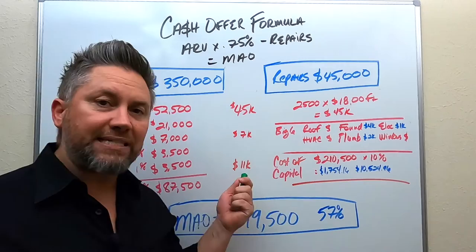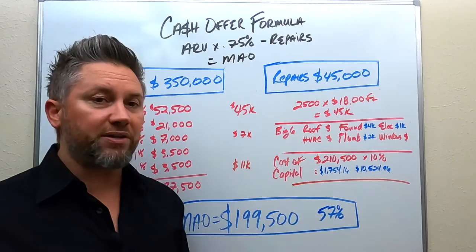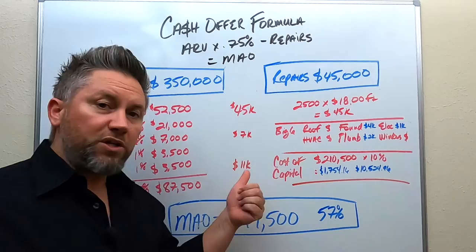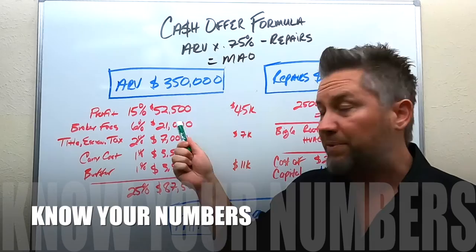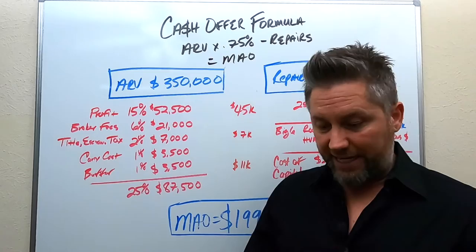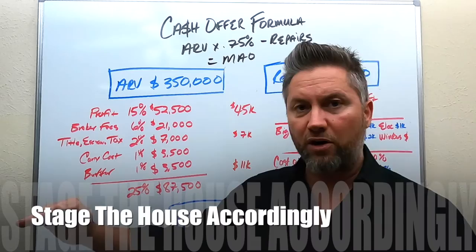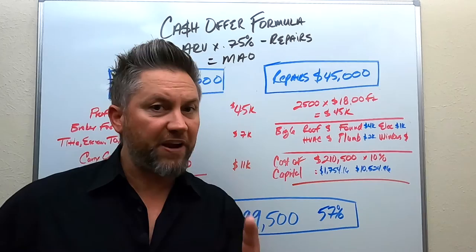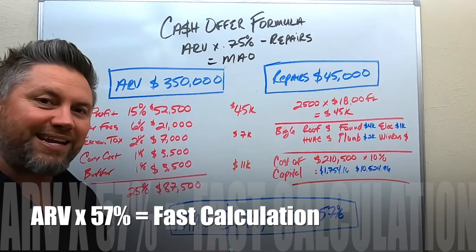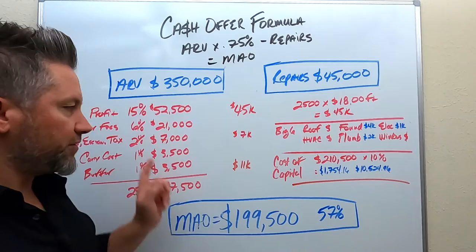This example mirrors almost identical numbers to our mid-crest flip: ARV at $350,000, we paid $210,000, but had $60,000 in repair costs to get it to the finish line. Once you calculate all expenses, take ARV times 75% and know that potential profit is diminishing every single day — taxes, insurance, utilities, labor, and material costs mean a diminishing return. You've got to get the property done fast, get it to the finish line, and sell it quickly. And here's the fastest shortcut: ARV times 57% gets you to $199,000, factoring in all expenses including borrowing and a six-month timeline.